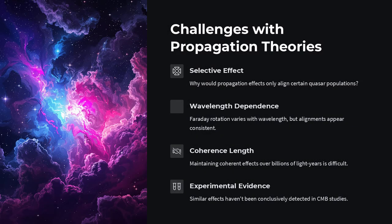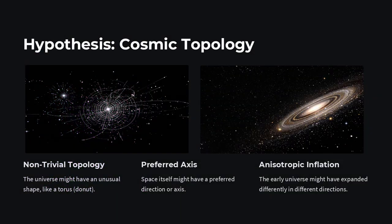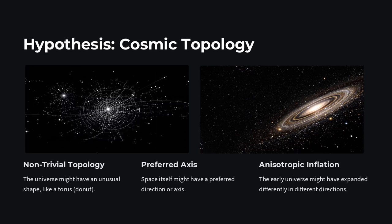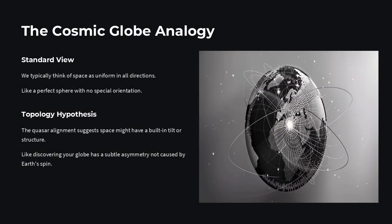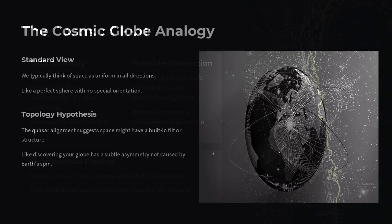Normally, you'd expect each quasar's polarization to be a cosmic lottery draw, independent of its neighbors. Yet surveys reveal patches hundreds of millions of light years across where polarization angles line up, an alignment so vast it strains our assumptions of a perfectly uniform universe.